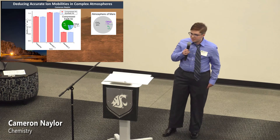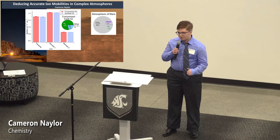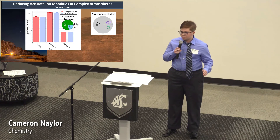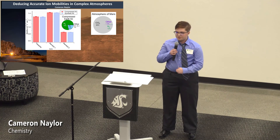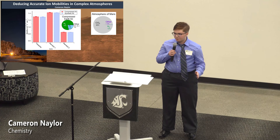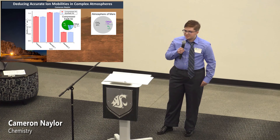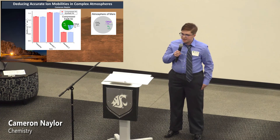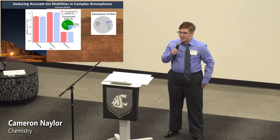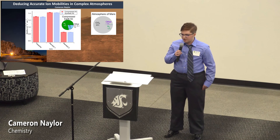Then we moved on to a more complex mixture, and we measured the molecules in a mixture of 78% nitrogen, 21% oxygen, and 1% argon, which we dubbed synthetic air, shown in blue in the bar graph behind me. We compared those results to those molecules measured in actual compressed air, shown in red on the bar graph behind me. We found that there was a significant difference in mobility for the smaller molecules, such as the tripeptide, than for the larger molecules, indicating that the trace gases in actual air in that 1% cause a significant difference in mobility for smaller molecules.